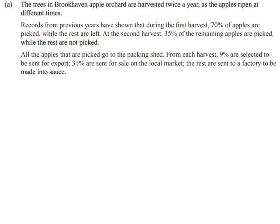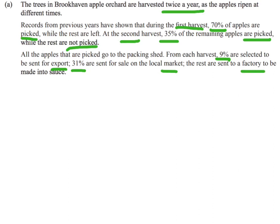Here's our problem. We're talking about an apple orchard where trees are harvested twice a year as the apples ripen. In the first harvest, 70% of the apples are picked and the rest are left to ripen. Then at the second harvest, 35% of those remaining apples are picked and the rest are not picked at all. Once picked, the apples go to the packing shed: 9% are sent for export, 31% are for sale at the market, and the rest go to the factory to be made into sauce.